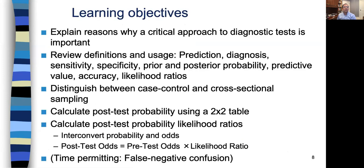Learning objectives for this lecture are to explain why a critical approach to diagnostic tests is important; to review some definitions and usage — prediction, diagnosis, sensitivity, specificity, prior and post-test probability, predictive value, accuracy, and likelihood ratios. We'll draw an important distinction between case-control and cross-sectional sampling, and calculate post-test probability two ways: first using a two-by-two table, and then using likelihood ratios, for which we'll need to learn how to interconvert probability and odds. And if there's time, we'll talk about false negative confusion.